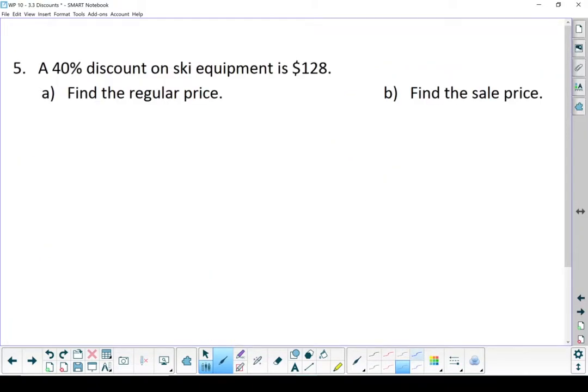Okay, example number five. A 40% discount on ski equipment is $128. Find the regular price, and then find the sale price. We've got our discount percent there, and this one right here is a discount in dollars. The key to these questions is figuring out and knowing what each number is.